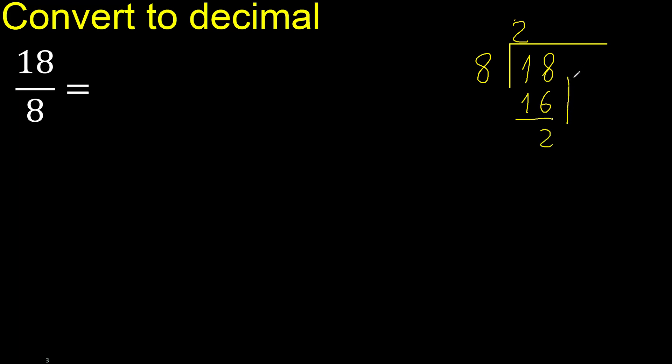Next. There is no number, therefore always complete with 0, here with a point. 0 point, 20.